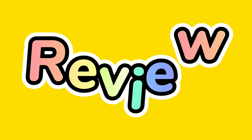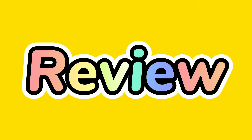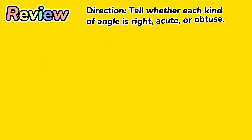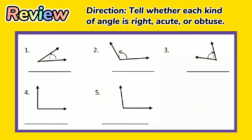Before we go through, let's have a review. Tell whether each kind of angle is right, acute, or obtuse. Number 1: Very good! It's an acute angle.